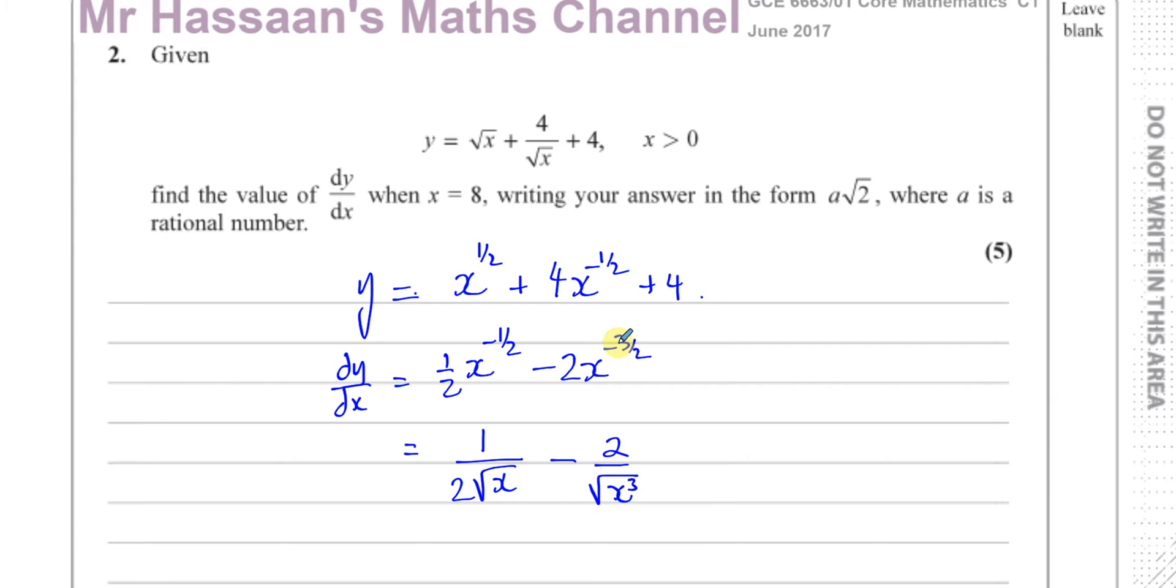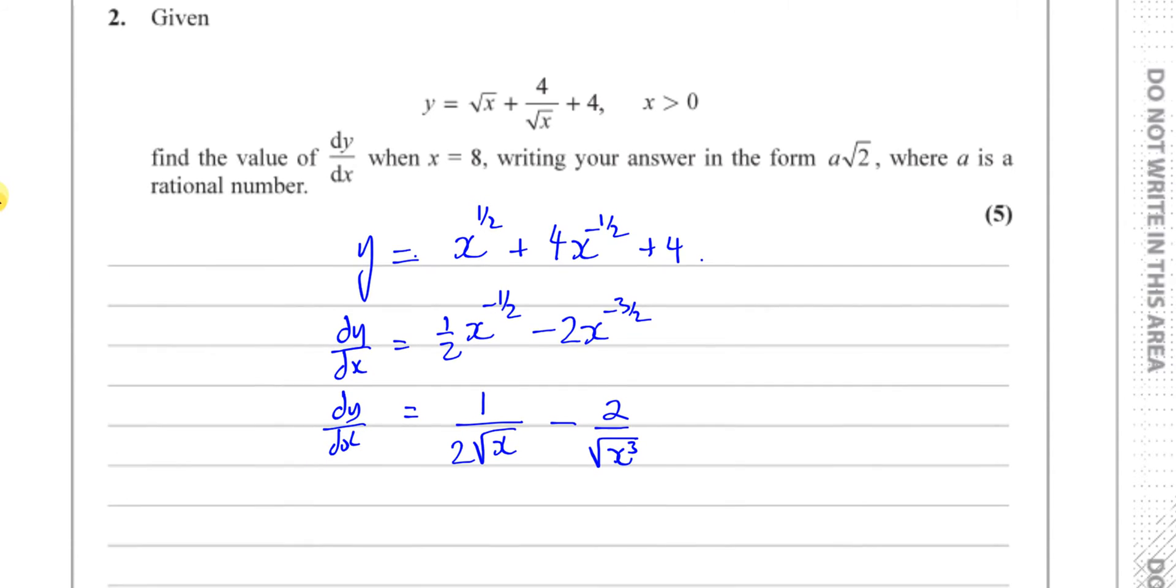Minus this 2 is up here. And this will be the square root of x cubed. Remember the power - if you have an index form, the numerator of the index is the power and the denominator is the root. The minus means it's going to be written in the denominator, so reciprocal. So this is dy/dx now in a form which is easy for us to substitute values in.